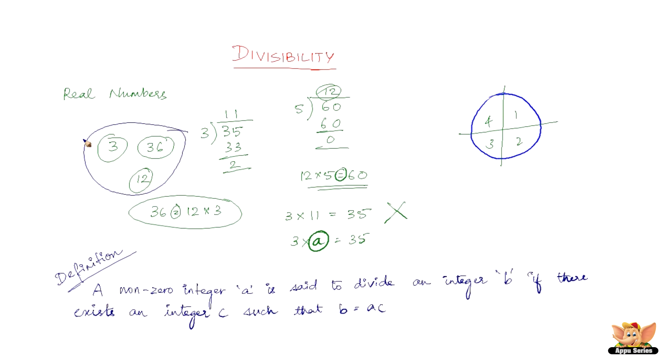In this case, a non-zero integer A is 3. Now this is going to divide 36, which is B. And if there exists an integer C such that B equals AC, in this case, the C is 12. So there does exist an integer C in this case, which is 12, such that you get 36 equals 12 times 3. So this is the formal definition of divisibility.